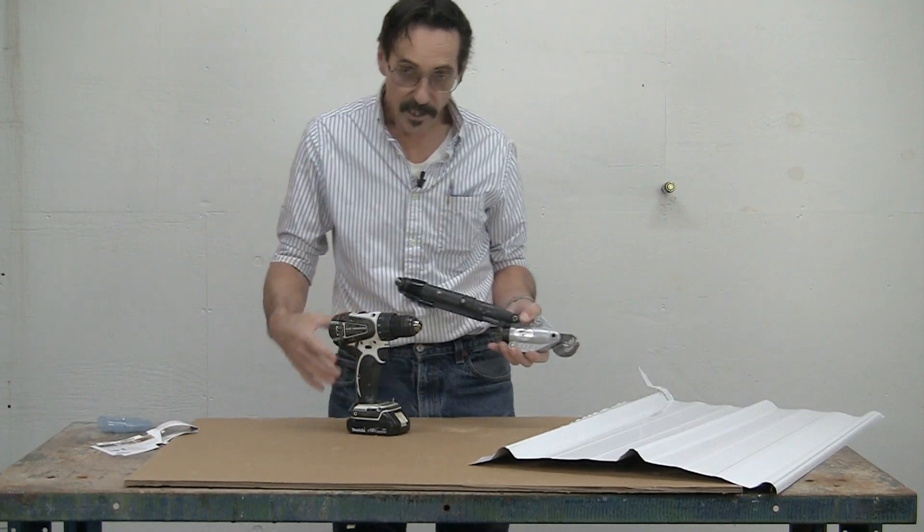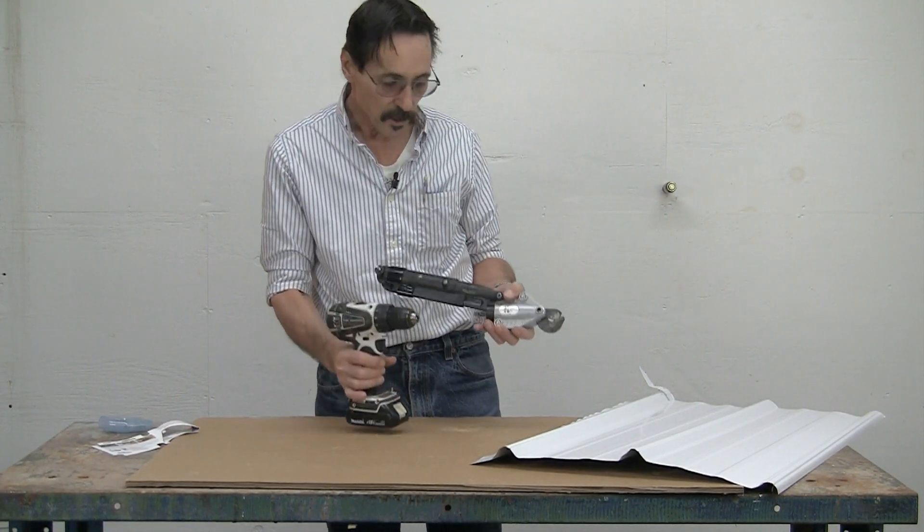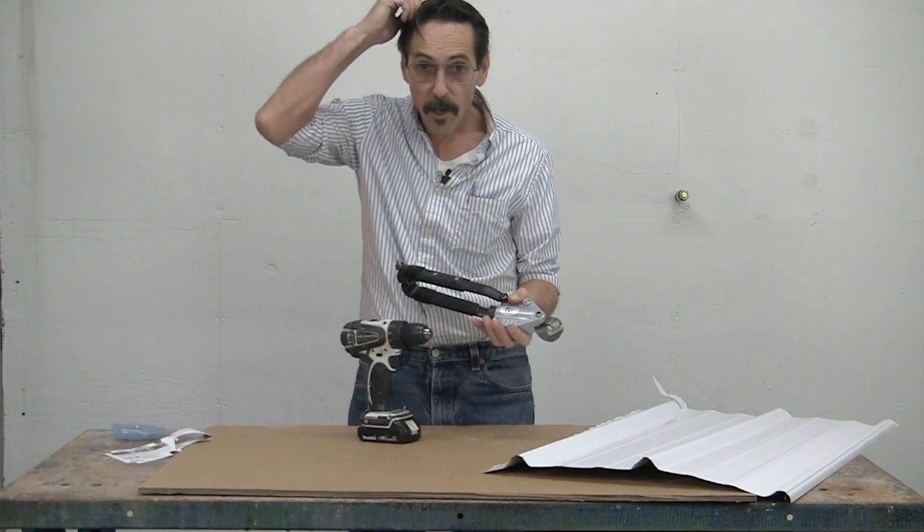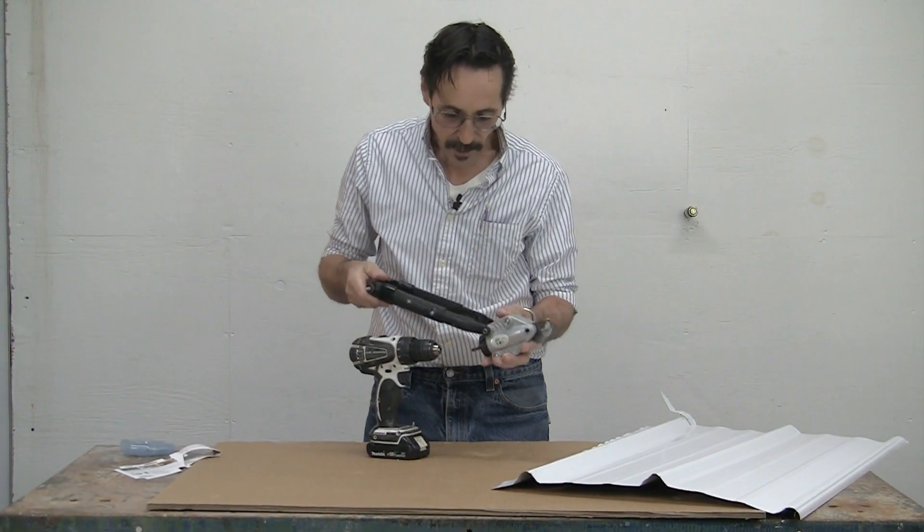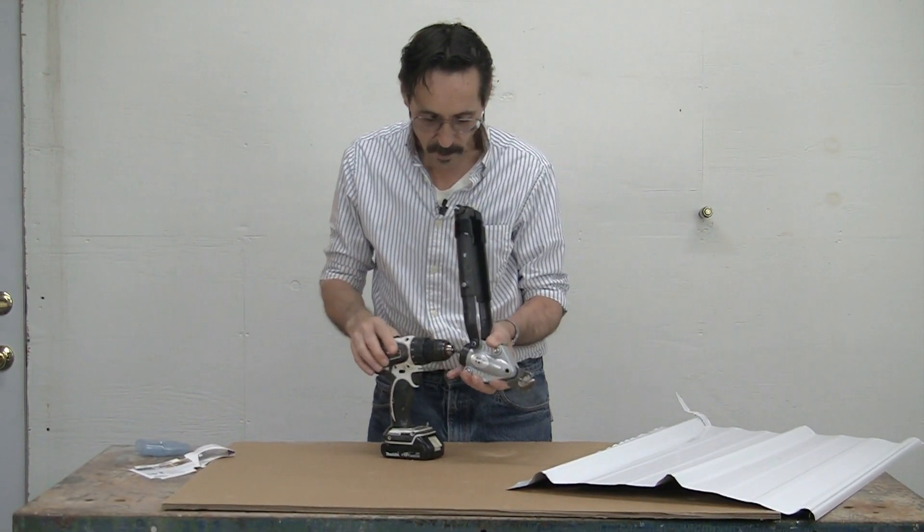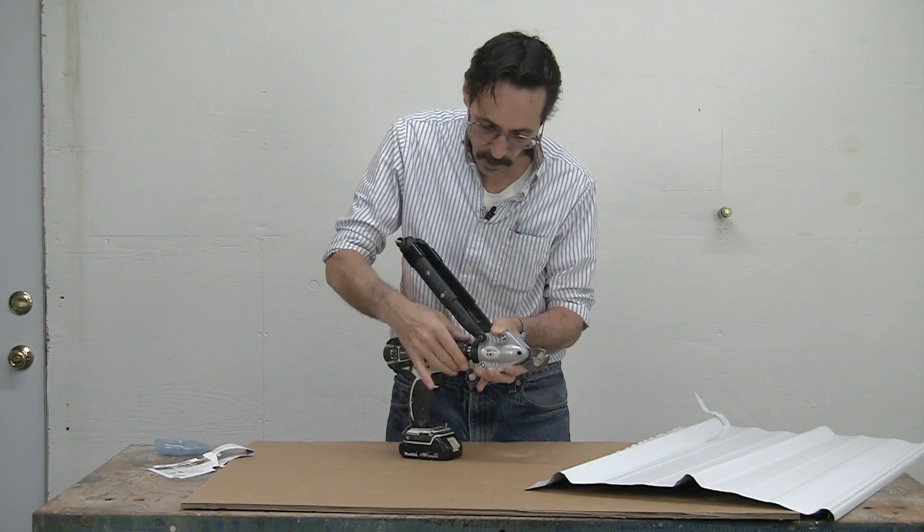All right, I've got a Makita cordless drill, and that's what we've been using. I was doing a lot of pole barn building out here and cutting steel. This is how it works. You just chuck it in.